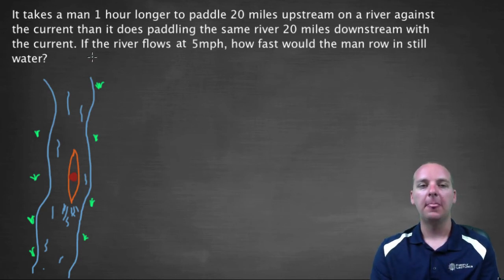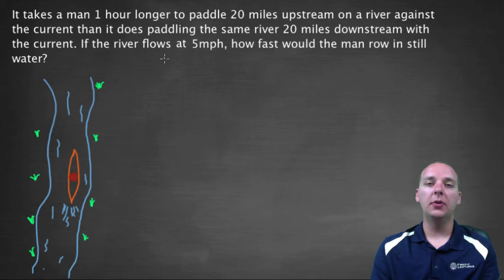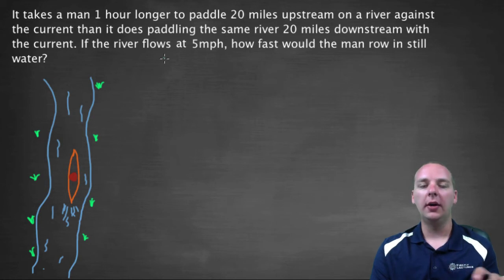And then you have minus that speed of the current of the river against you when you're going upstream. So that makes sense. Then they tell us if the river flows at 5 miles per hour, how fast would the man row in still water? So if you just put him in a giant swimming pool, how fast would he row then if the river is not helping or hurting him?